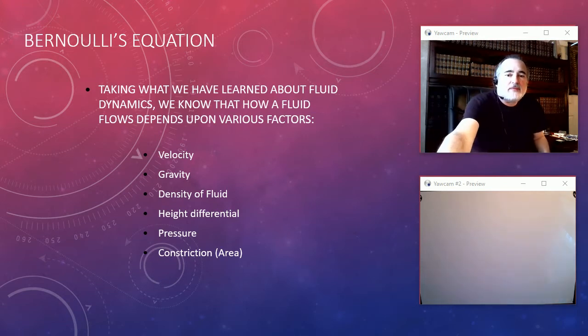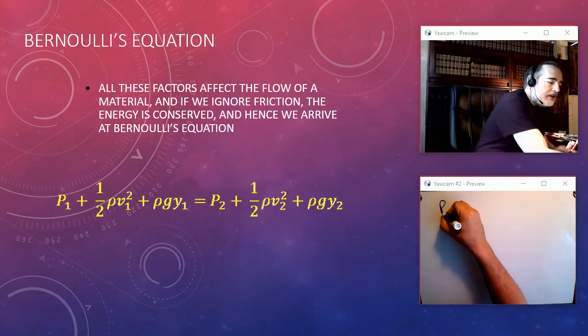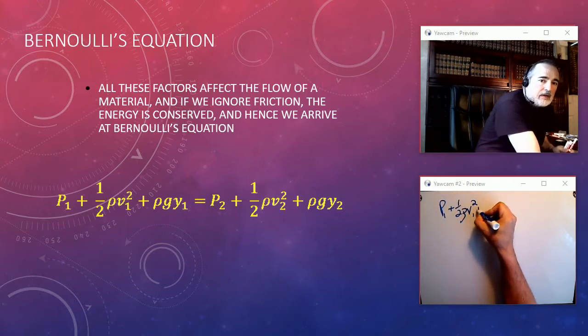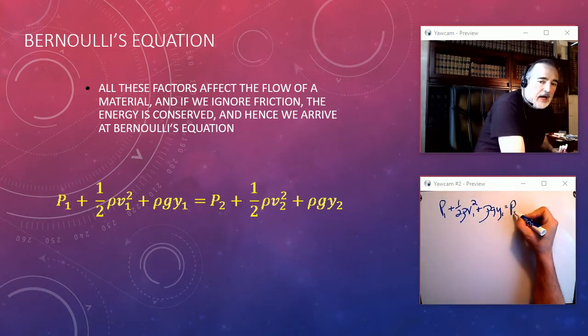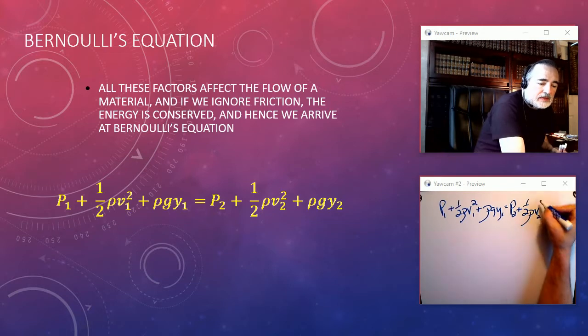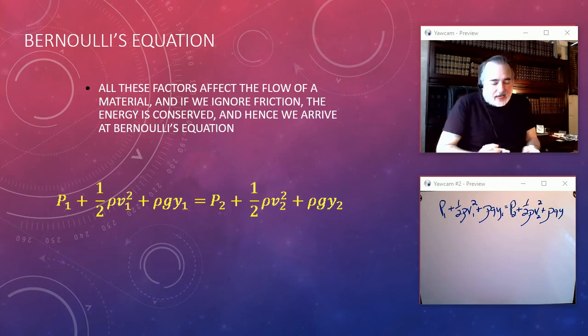So if we take all those factors together, we get something called Bernoulli's equation, and I'm going to just write it down here because we're going to use it in a few problems. And what you see here is not only do we have the relationship with speed, as I'm writing, but we have also a relationship with distance and height and pressure.